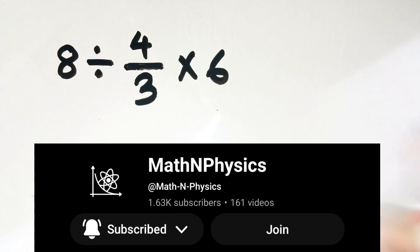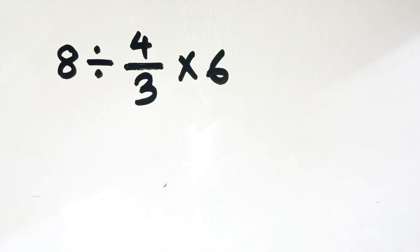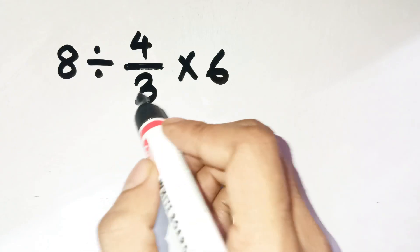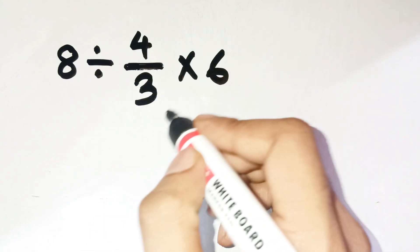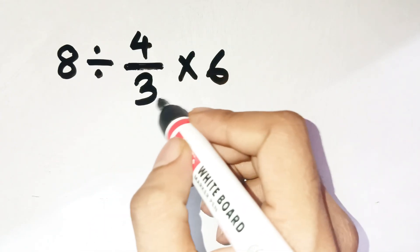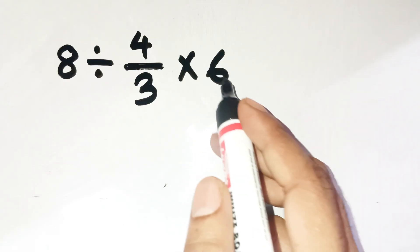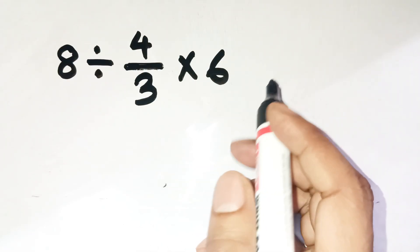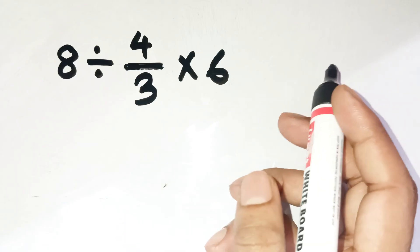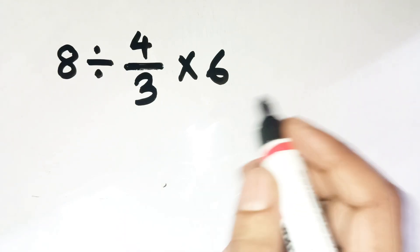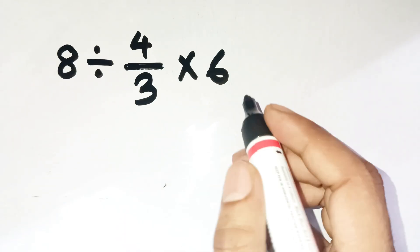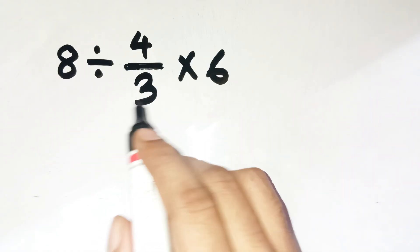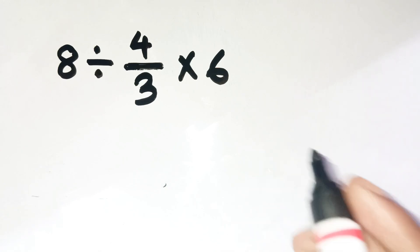So let's talk about why that shortcut doesn't actually work. The mistake is thinking you're allowed to pluck the 3 from the 4 over 3 and divide it into the 6 on the other side of the fraction — like you're allowed to tear the fraction apart and rearrange the pieces. Math does not allow that. A fraction is one whole number, a single grouped value. You can't steal its denominator and toss it somewhere else just because it feels convenient.